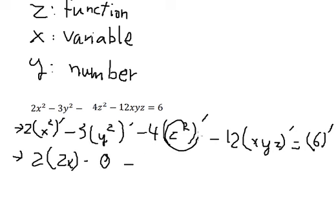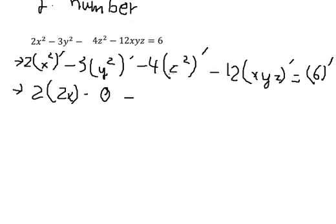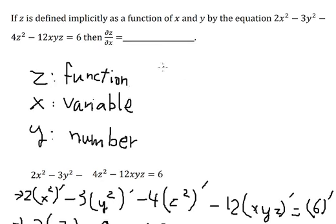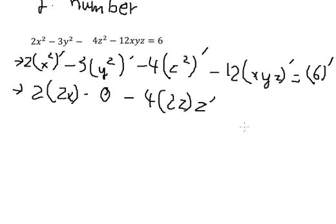This term is a function, so when we do the partial derivative with respect to x, we have 2z. But since z is a function, we need to include the partial derivative of z, so we need to write it like this.